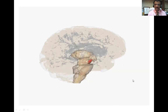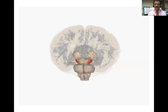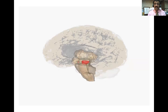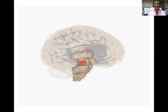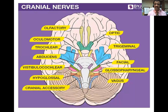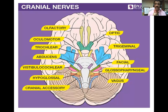We have finished the gross anatomy of the spinal cord and with it the central nervous system as a whole. But there are miscellaneous structures still to study, like the coverings of the brain. We are looking at 12 pairs of cranial nerves, which you can see in this image in different colors with white letters on blue background.